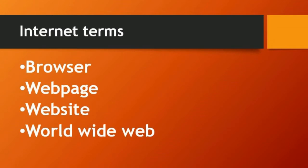Let us see internet terms. The first one is browser, the second one is web page, the third one is website, and the fourth one is World Wide Web. These are the internet terms. Let us see each one in detail.